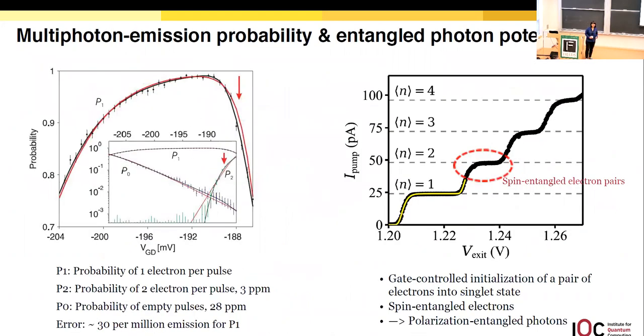We all know that multi-photon emission is a problem for some optically driven systems. What about in an electrically driven source with a pump? When you look at this simulated probability curve, the probability to have one electron per pulse can be higher than 99 percent when the probability to have empty pulses and multiple electron pulses are minimized. This simulation is done in 2013. Actually, recently there is experimental data showing they could have as little as 30 error pulses per million emission of single electrons.